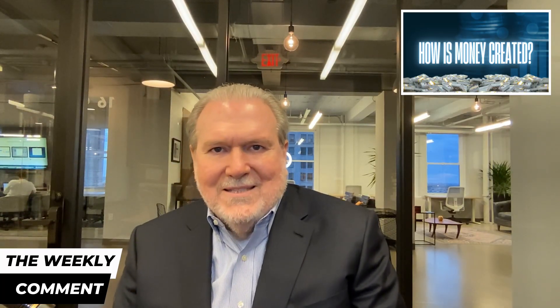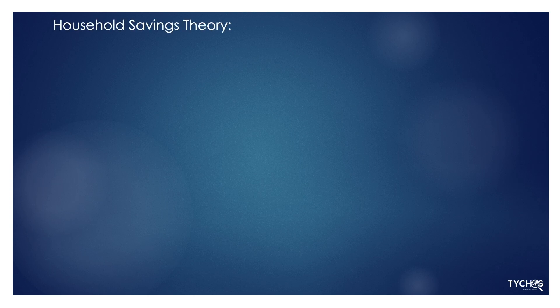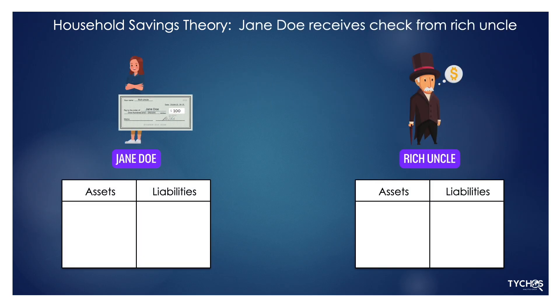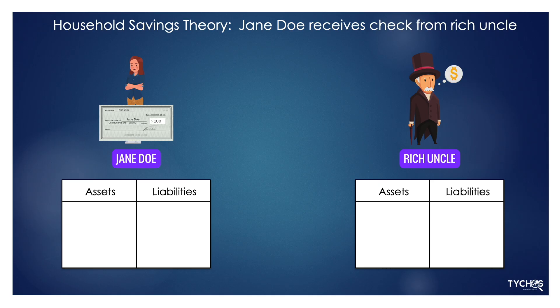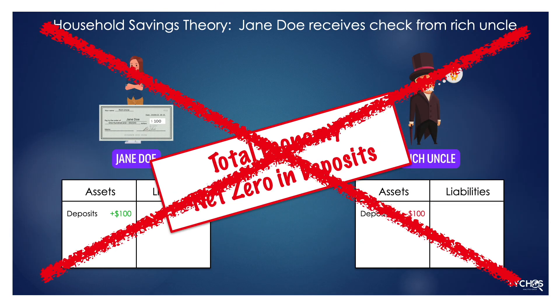Where in the world did this $16 trillion come from? Some have answered the question by saying it was households saving money that created those deposits. But when Jane Doe gets a check from her rich uncle and deposits it in the bank, her deposits go up, but the rich uncle's deposits go down by that exact amount. So the amount of deposits in the system as a whole stays exactly the same. That's not the answer.